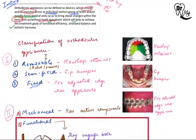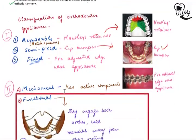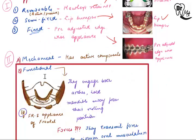Based on whether the patient can remove the appliance or not, they can be classified as removable, semi-fixed, and fixed. Removable appliances can be removed by the patient — an example is the Hawley's retainer, shown here. Semi-fixed appliances have some parts which can be removed by the patient — an example is the lip bumper. Fixed appliances, such as the pre-adjusted edgewise appliance, cannot be removed by the patient.